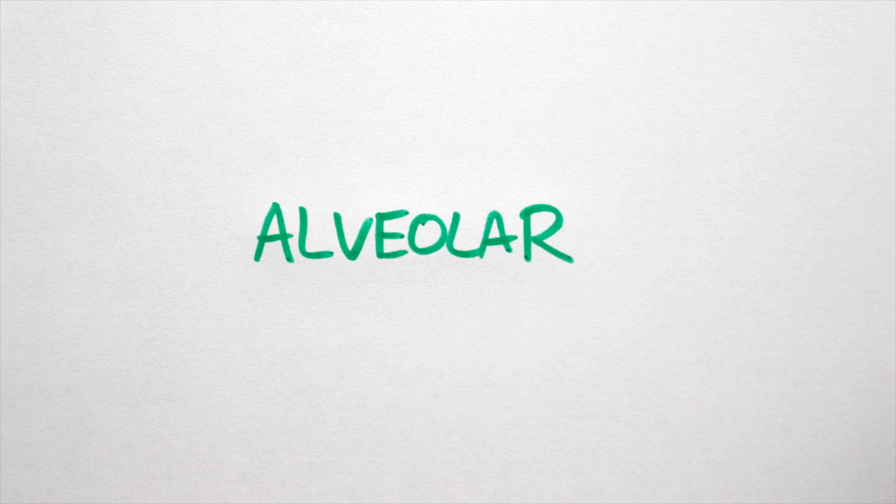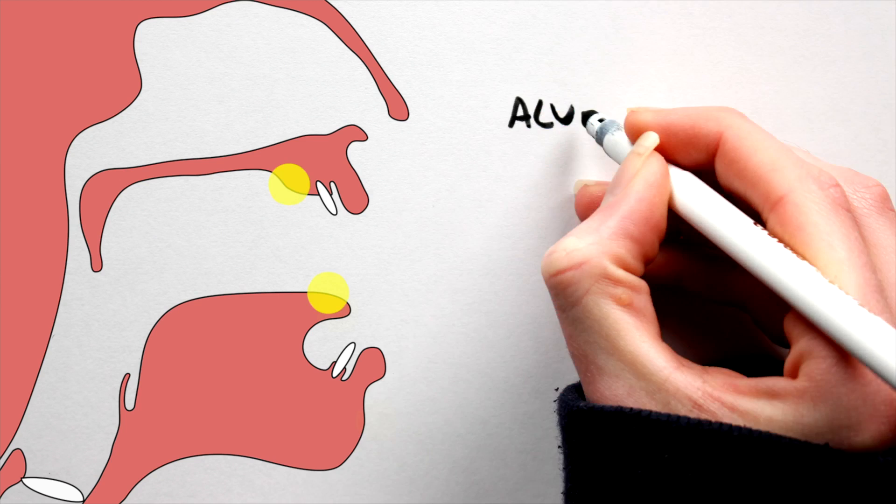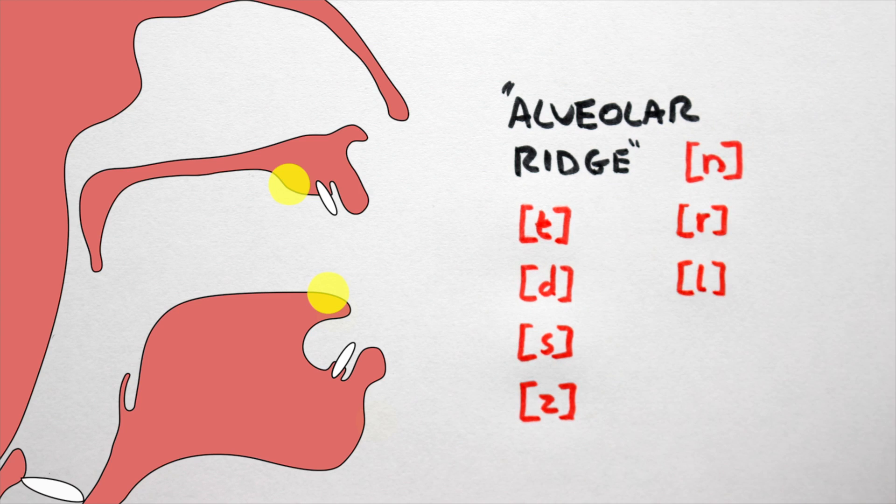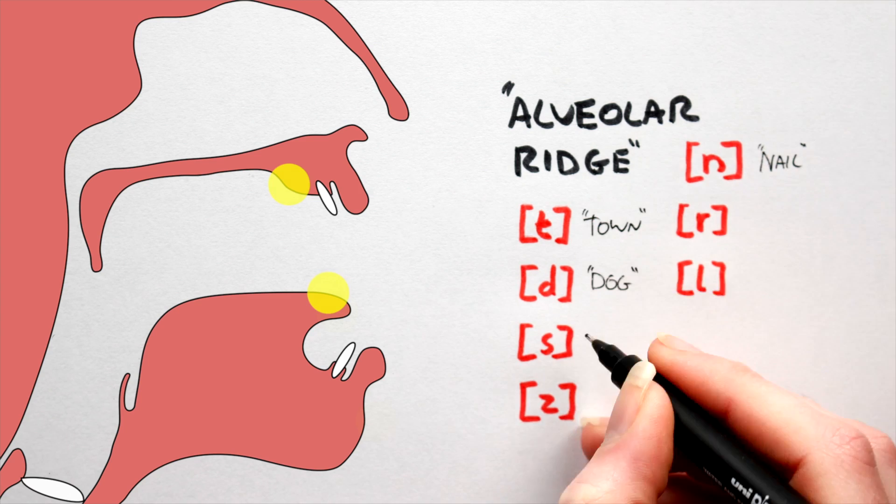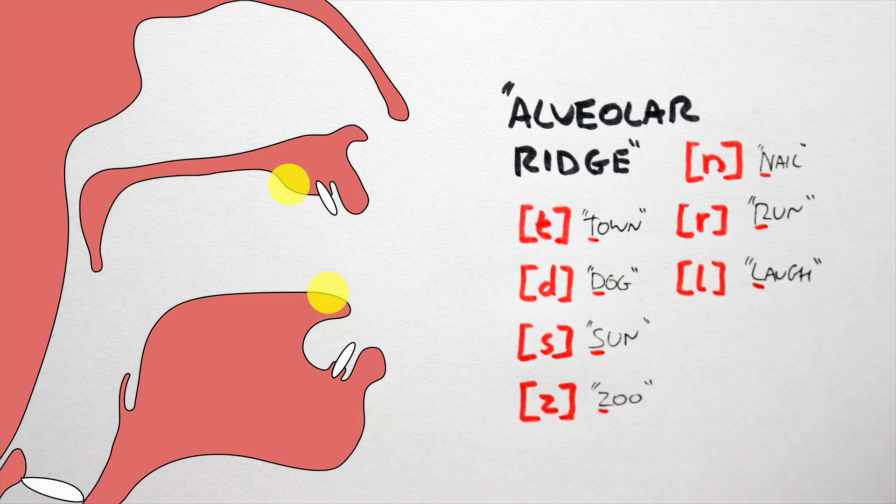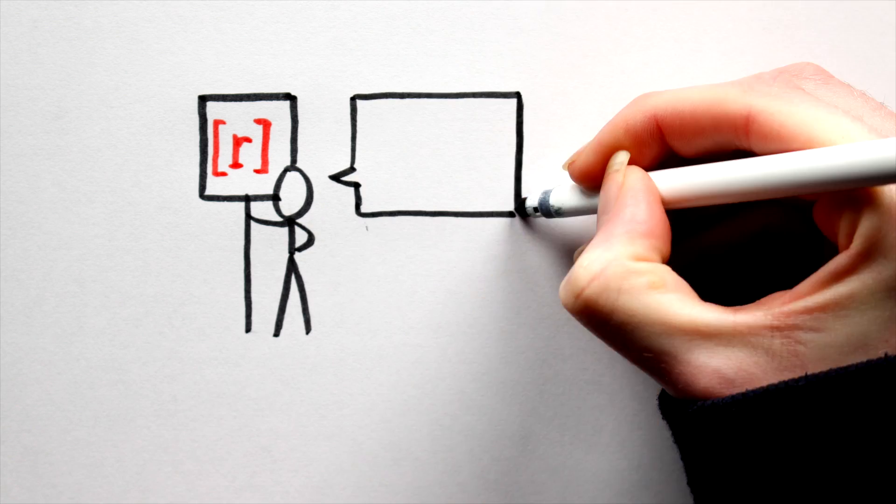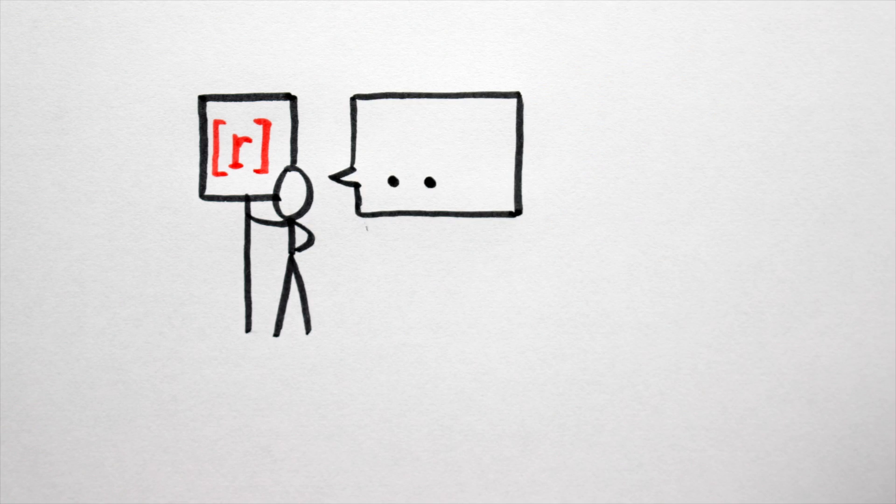Number four, alveolar. Here, the obstruction occurs at the alveolar ridge, that bony ridge just behind the upper teeth. We have a truckload of sounds here in English, namely na, ta, da, sa, za, ra, and la, as in nail, town, dog, sun, zoo, run, and laugh. Oh, and there's also the rolled r, which I cannot do. Luckily, this guy can.